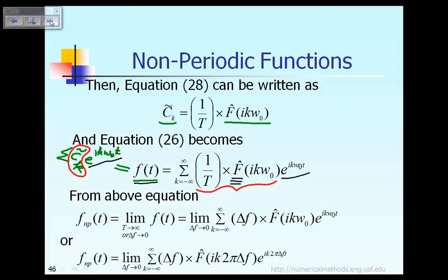Please remember that so far f of t has been a periodic function. Now the next thing we want to talk about is what happens when you have a function f which is non-periodic. A non-periodic function can be considered as a function f but having the period capital T equal to infinity. In other words, a non-periodic function is like a periodic function that repeats itself only after a time equal to infinity.